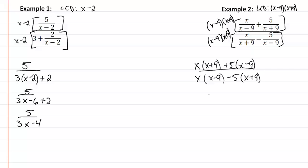So now I have x squared plus 9x plus 5x minus 45, all over x squared minus 9x minus 5x minus 5x.